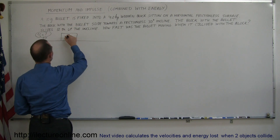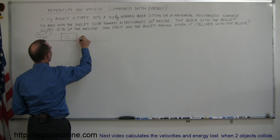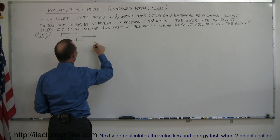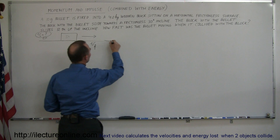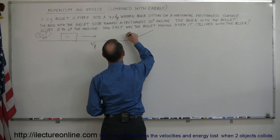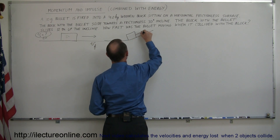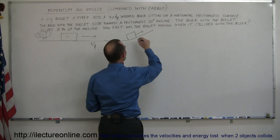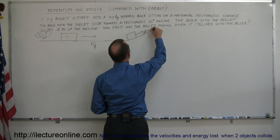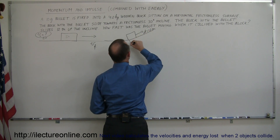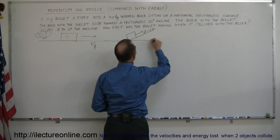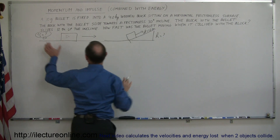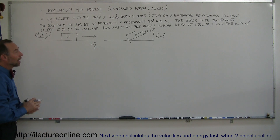The bullet gets fired into the block and stays stuck in the block, then the bullet and the block together slide to the right with some V final after the collision. They reach an incline and start sliding up, traveling a distance of 12 meters before the block comes to a stop. The question is how high did it go, and finally, how fast was the bullet moving before it hit the block.